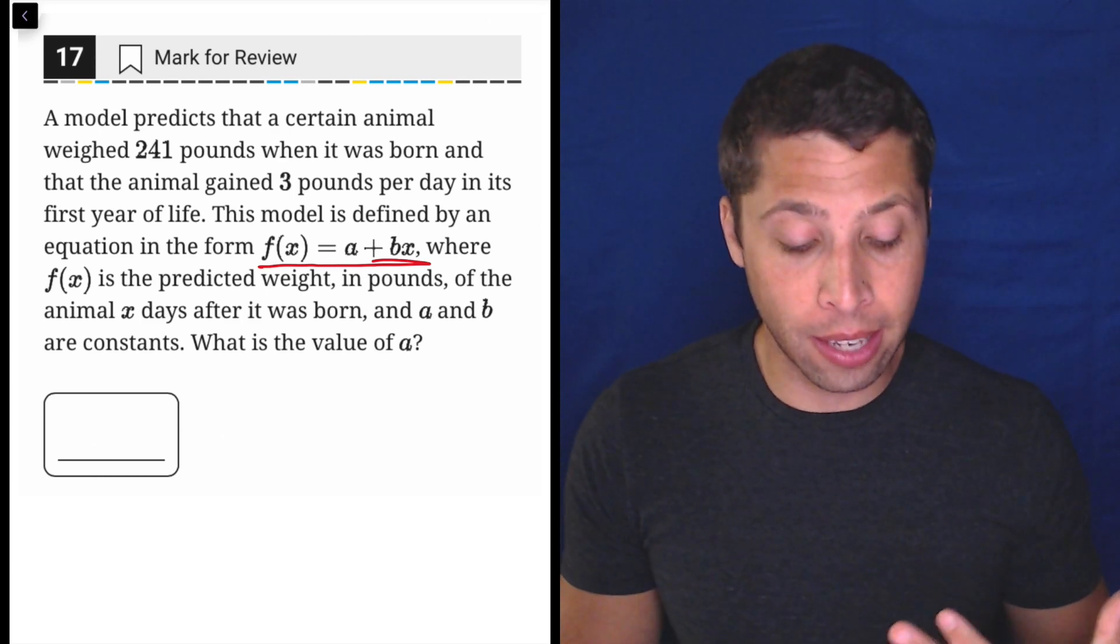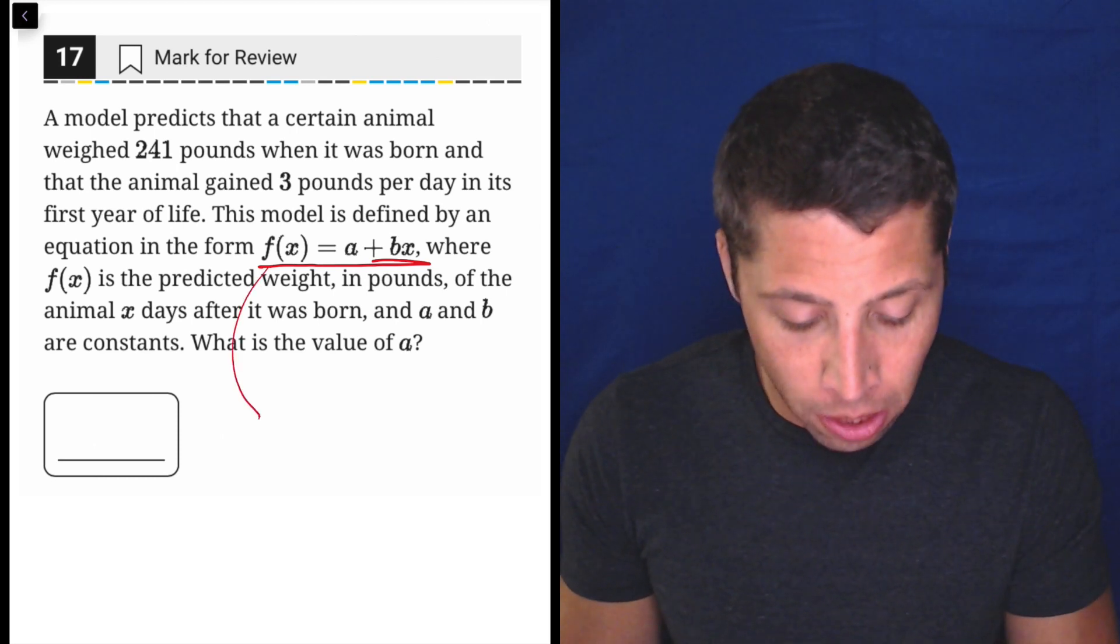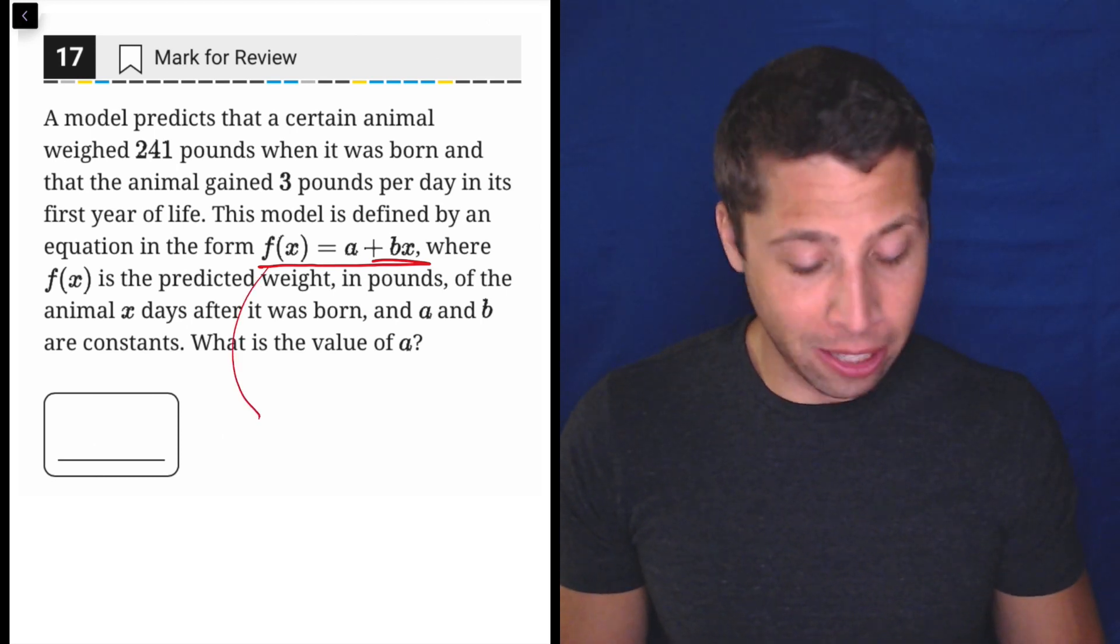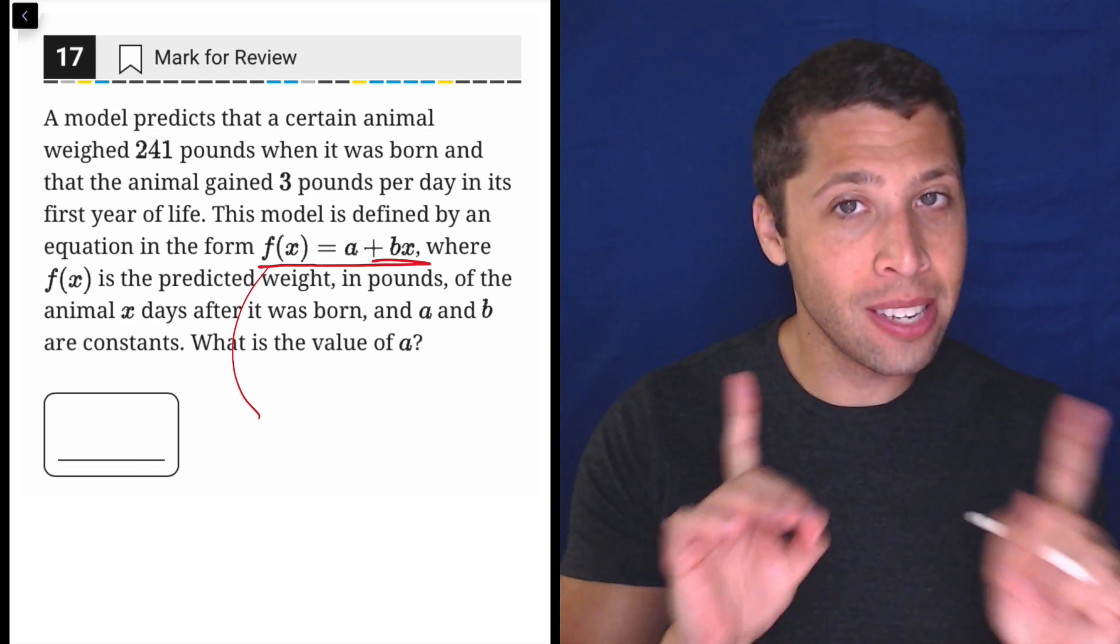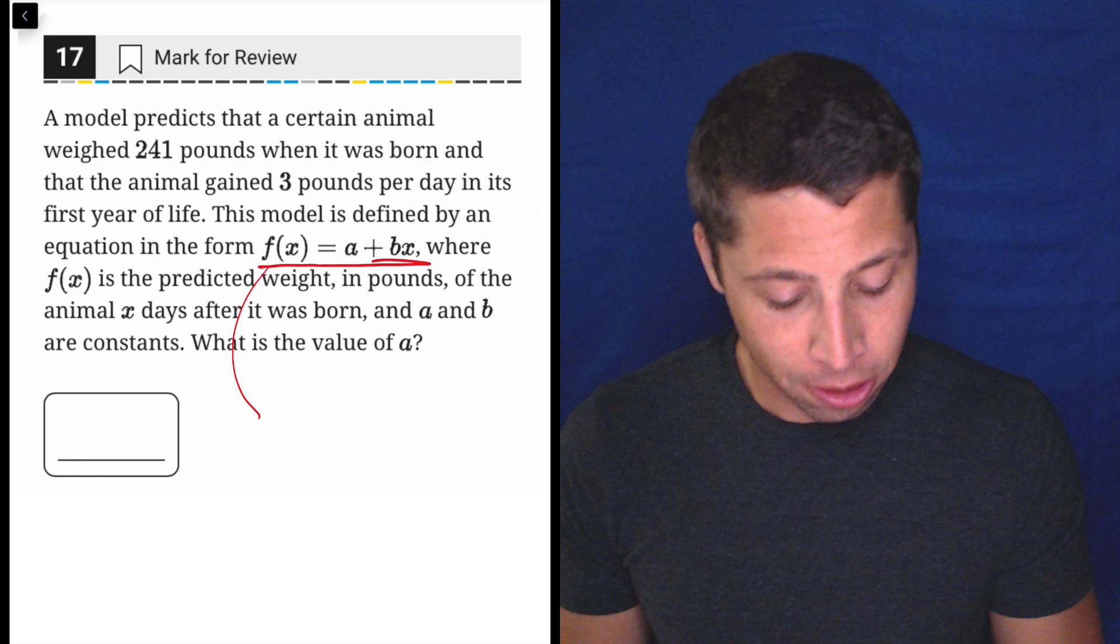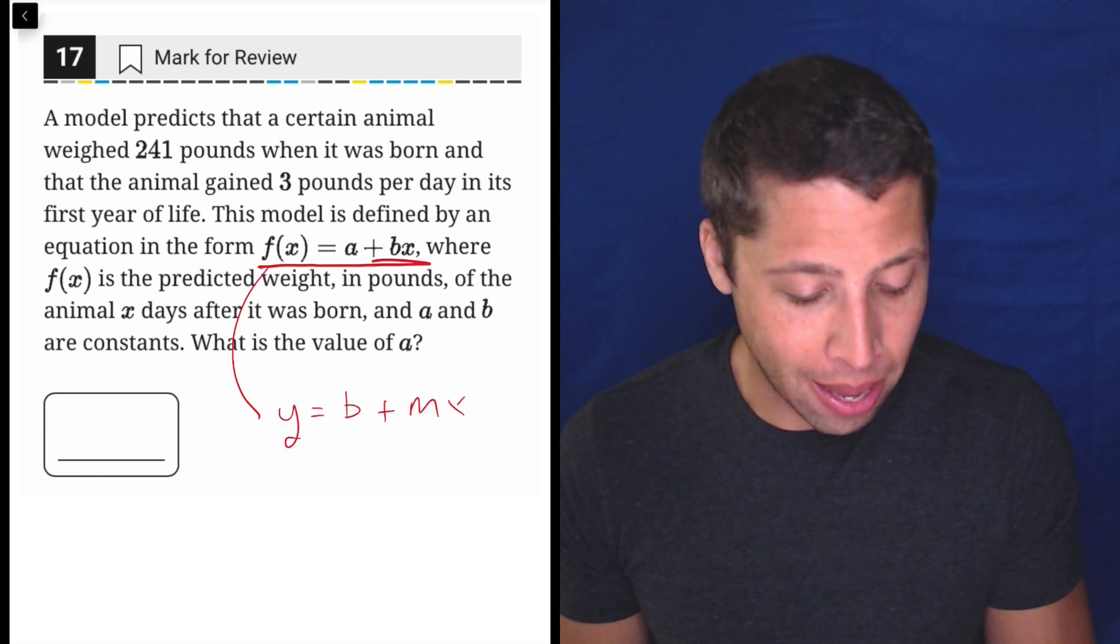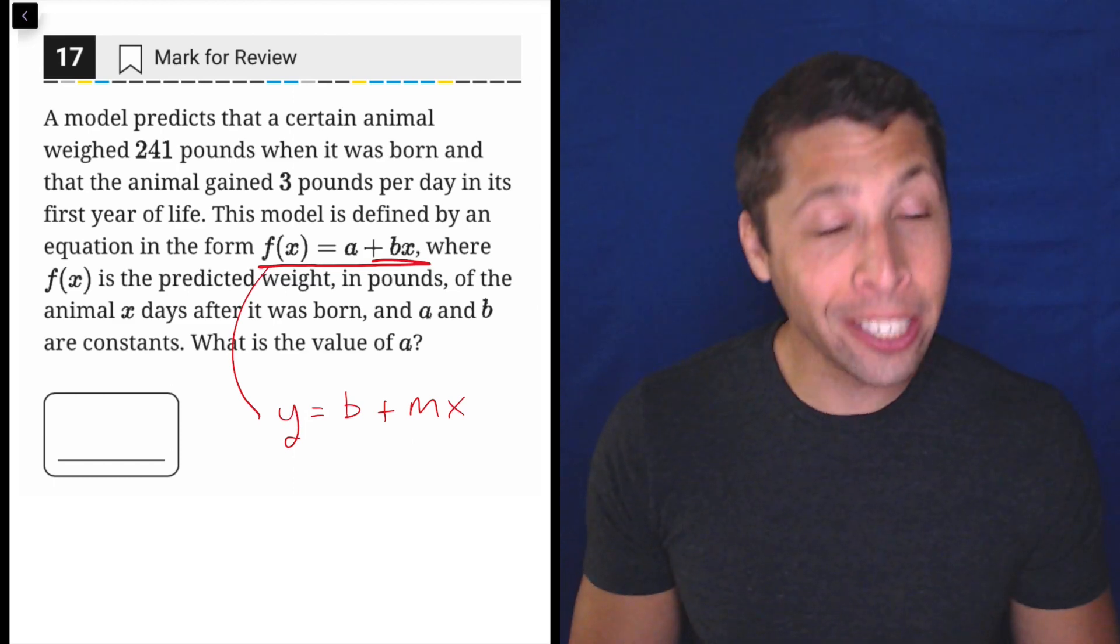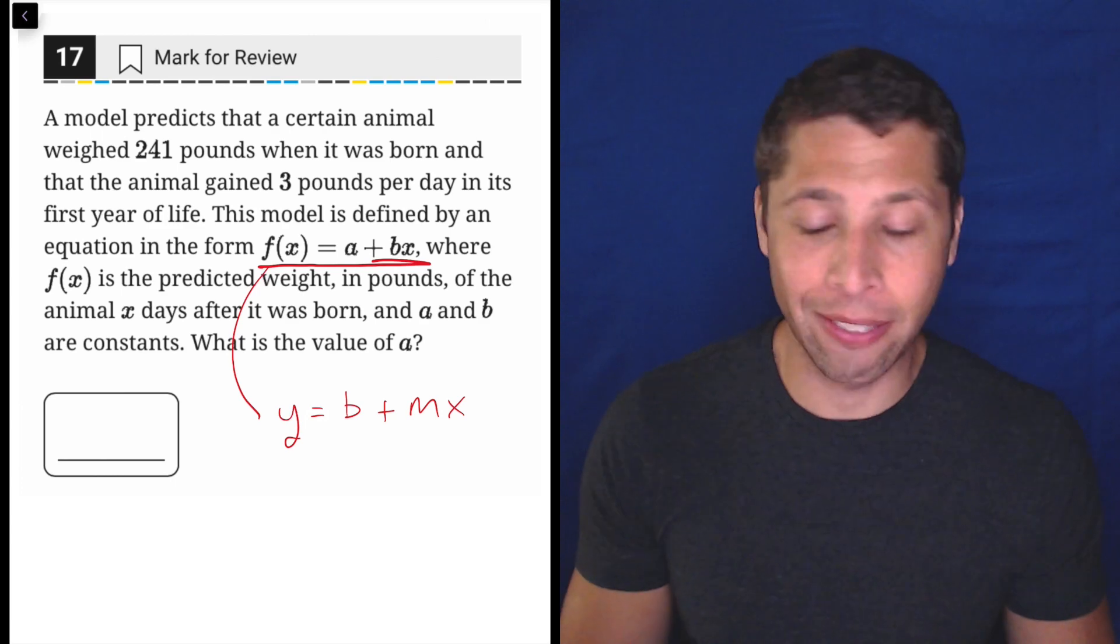So what I would do here is say, how does this match up with a normal linear equation? Well, the normal linear equation is y = mx + b, but you can see that they kind of flipped it here. So this is actually going to be y = b + mx. And I know that there's a b in our version and a different b in the version that they gave us.